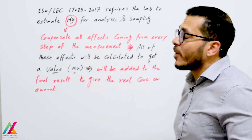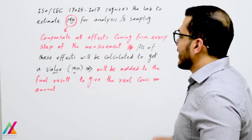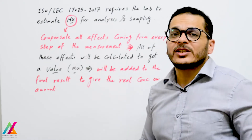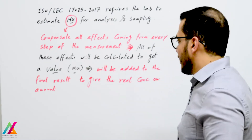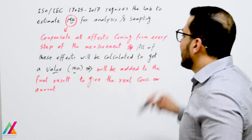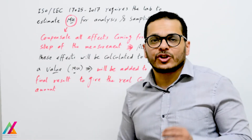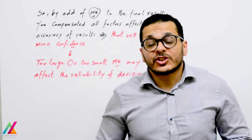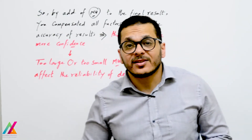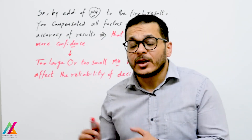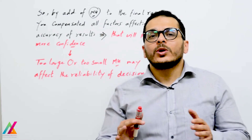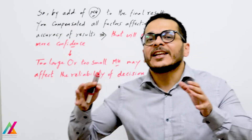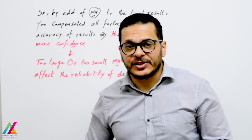All effects from every step of the measurement will be calculated and combined to give the measurement uncertainty value, which is added to the final result to give the real concentration, amount, or number of microorganisms. By adding the measurement uncertainty value to the final result, you compensate for all factors affecting the accuracy of the results.